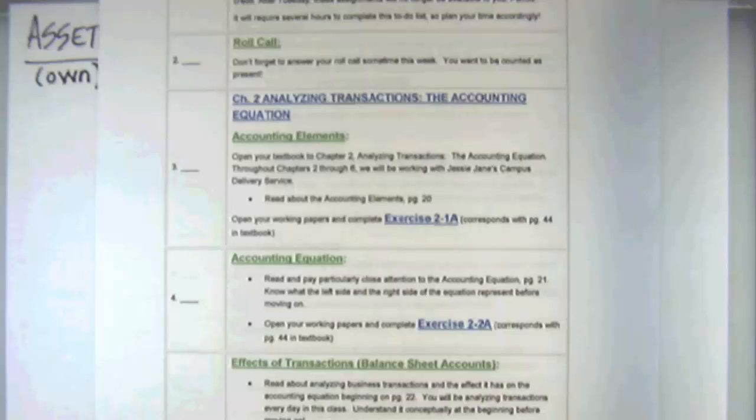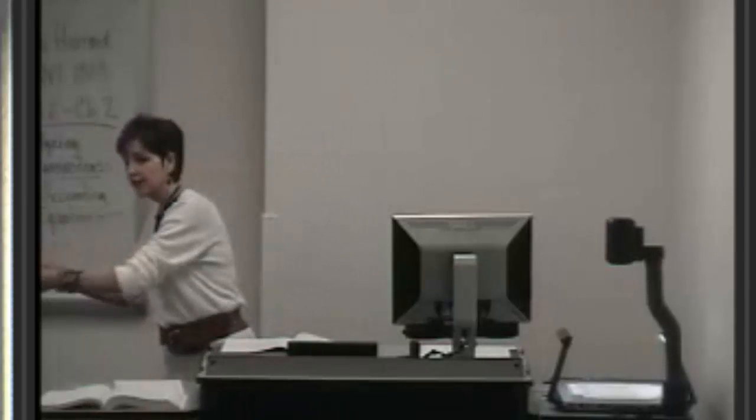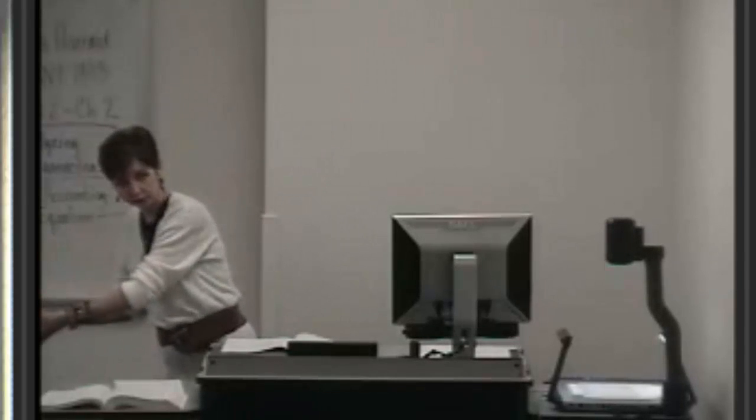Let's take a look at the very first one there, transaction A, investment by the owner. So we're starting out with a clean slate. Jessie Jane has decided that she's going to open this delivery service. And let's see what she does. Jessica Jane opened a bank account with a deposit of $2,000 for her business. Basically, she goes down to the bank. She takes $2,000 from her personal account. She takes it, removes it, and says, I want to place this in my business account. At that particular point then, let's look at our accounting equation.